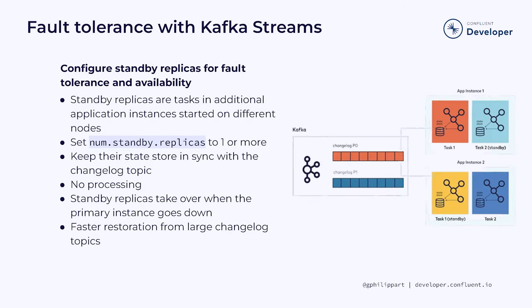When deploying a Kafka Streams application, make sure to configure standby replicas for fault tolerance and availability. Standby replicas are tasks in additional replication instances started on different nodes. You just have to set the num.standby.replicas configuration parameter to one or more. These standby replicas just keep their state store in sync with the changelog topic — they won't perform any processing — but the benefit is a much faster restoration from large changelog topics when your Kafka Streams application crashes.